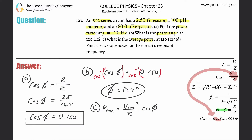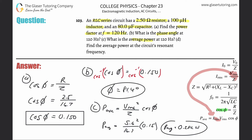The problem doesn't directly give us voltage, but from problem 101 the voltage was about 5.6 V. Plugging in: (5.6)² divided by the impedance of 16.7, multiplied by the power factor of 0.15. This works out to about 0.282 watts — that's the average power at 120 Hz.